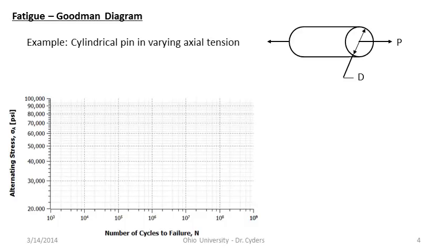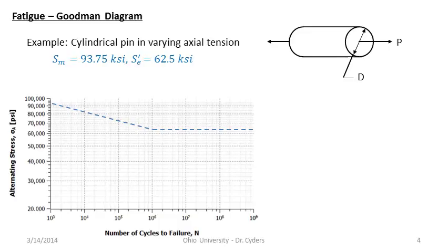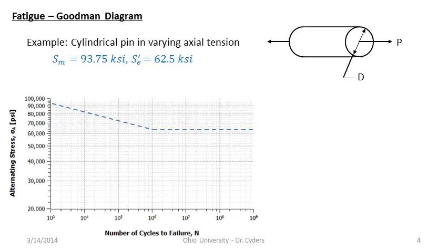Let's draw the SN diagram — this is an axial tensile case. SM, our strength at a thousand cycles, loses 25% because it's an axial case. This is because all fibers are stressed equally, taking the maximum load, as opposed to bending or torsion where only the outer shell takes maximum load. So SM is 93.75 KSI, reduced from 125 KSI, and the uncorrected endurance strength SE' is 62.5 KSI — half of 125 KSI.